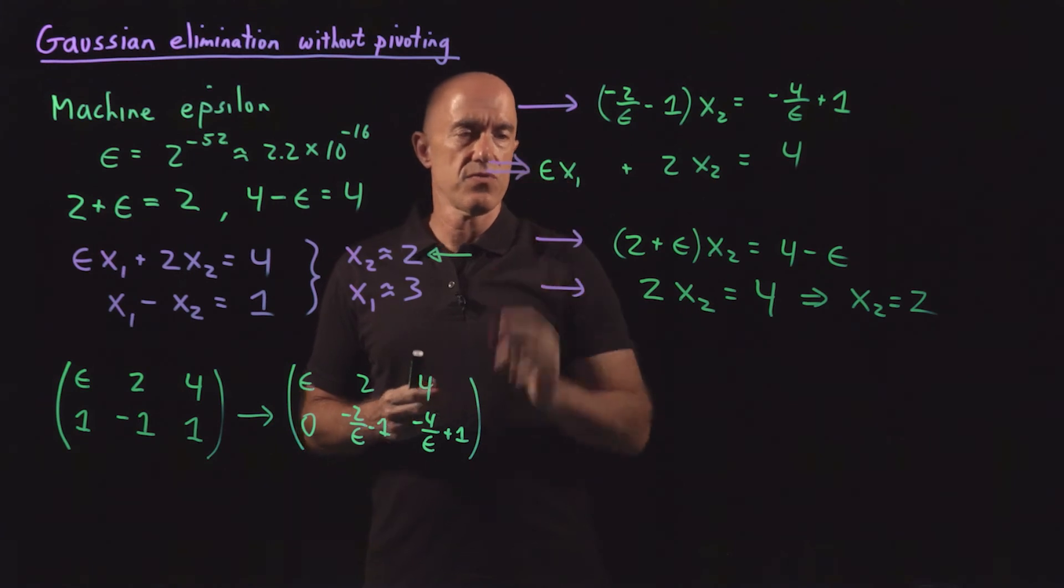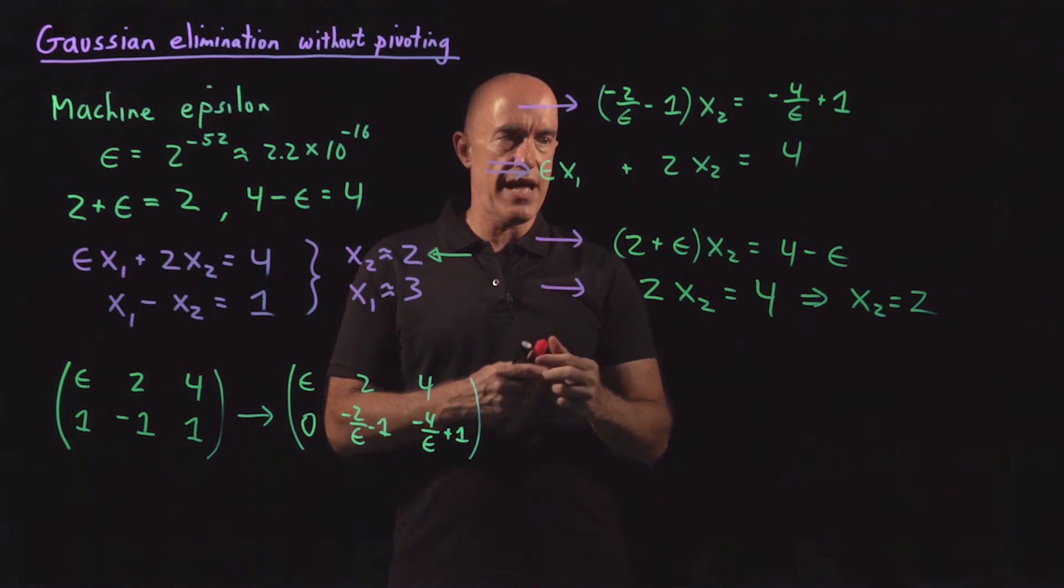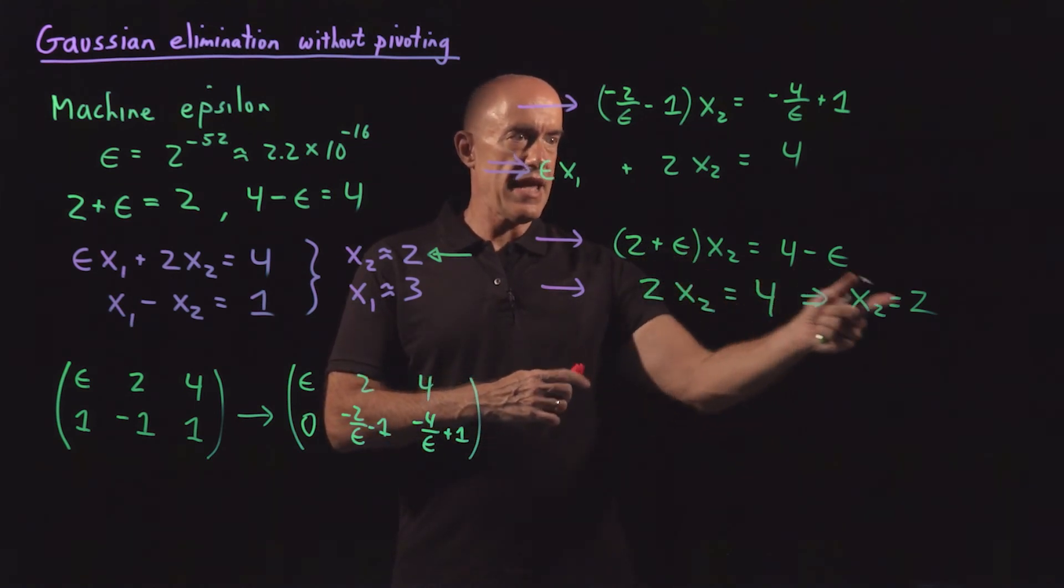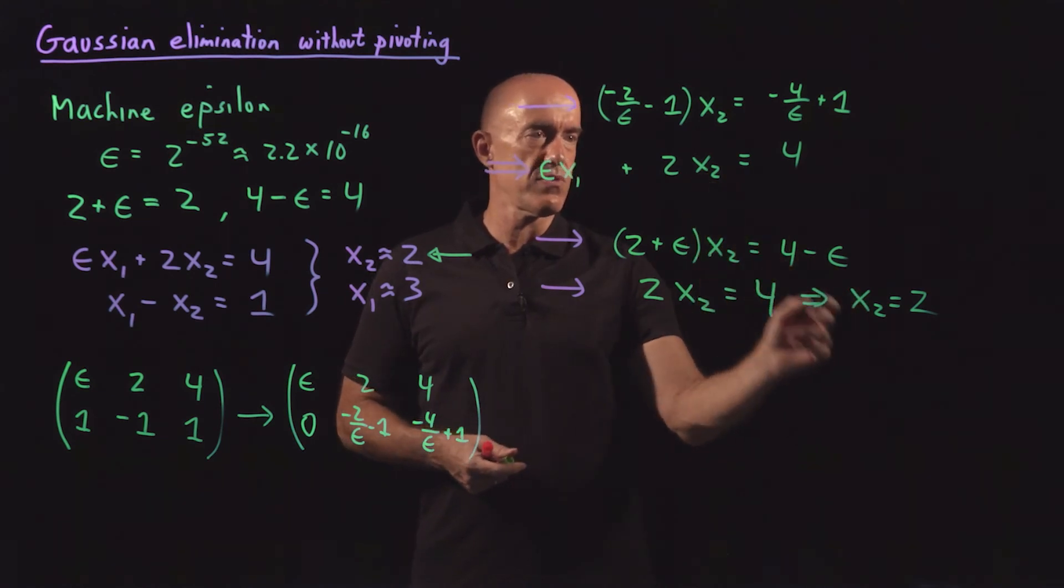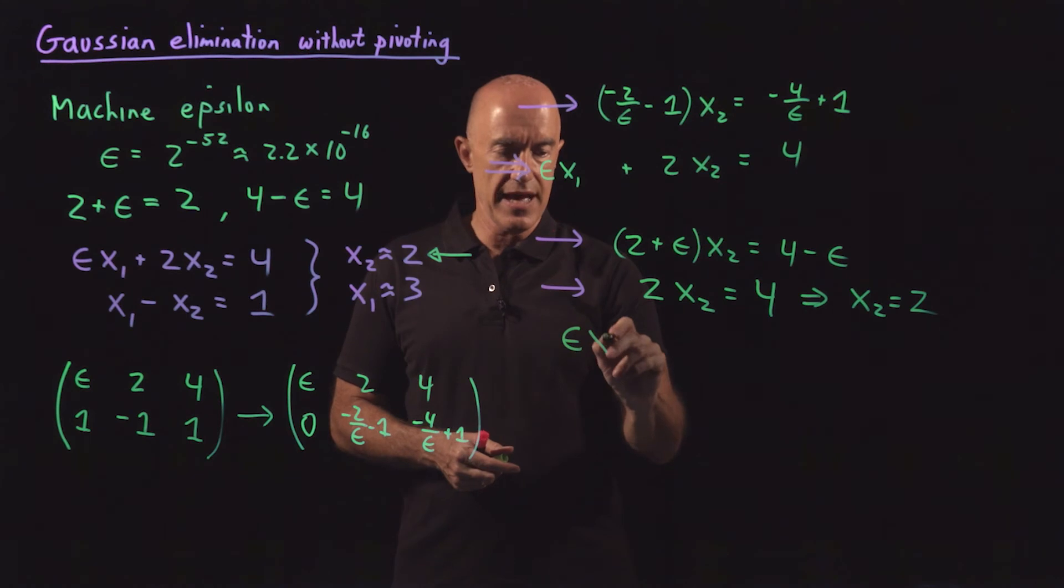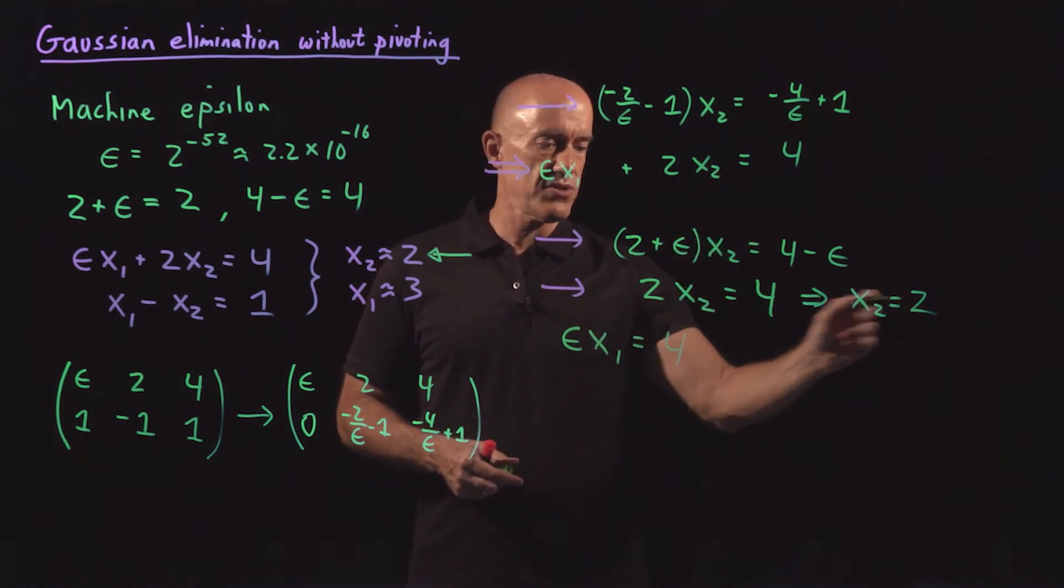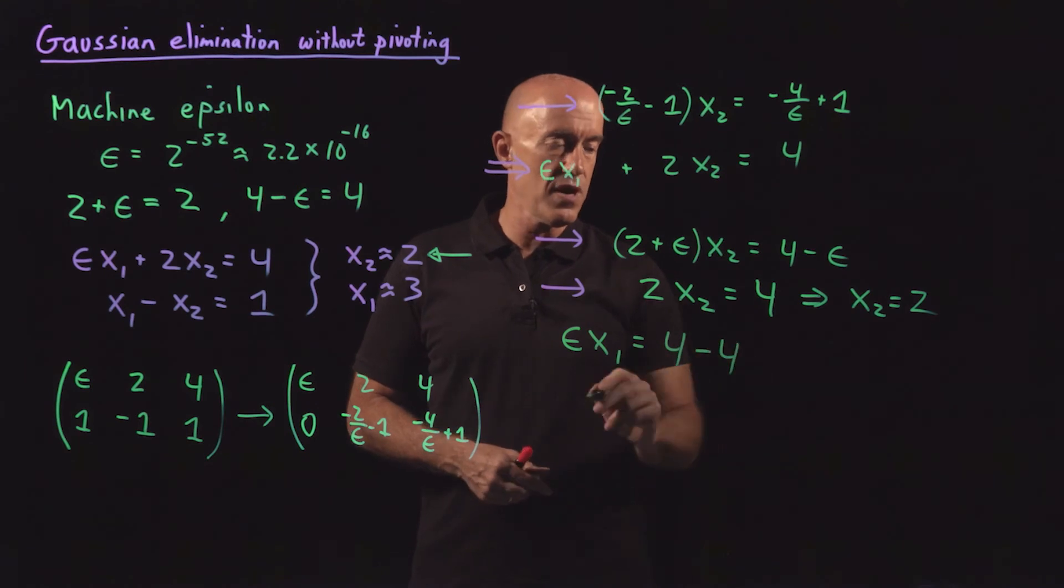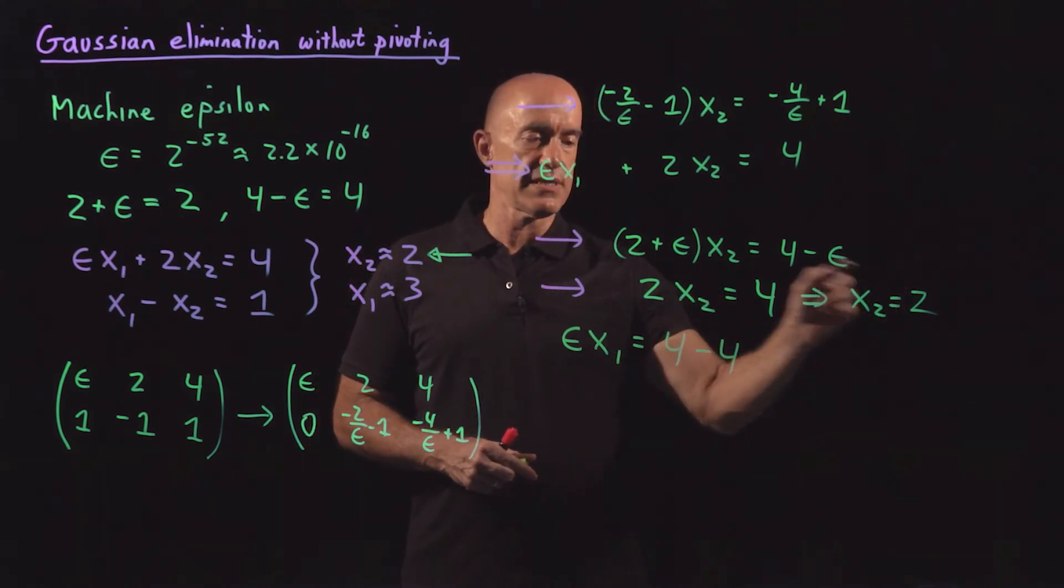We're trying to solve for x1 and x2 equals 2. So if I substitute in x2 equals 2 and bring it to the right, we get epsilon x1 is equal to 4 minus 2x2, which is 4. Exactly 4. Because x2 is exactly 2.